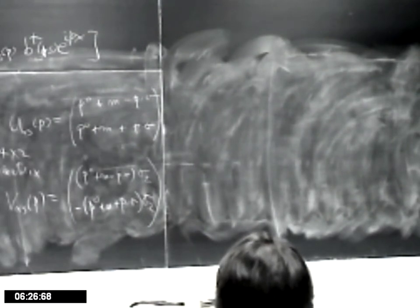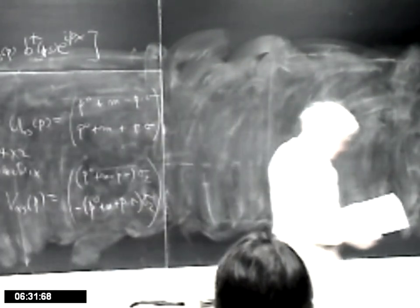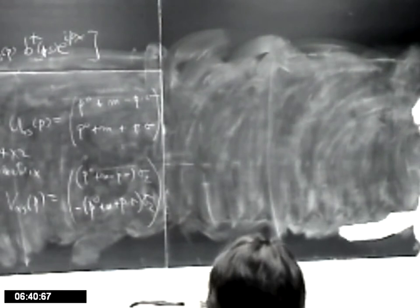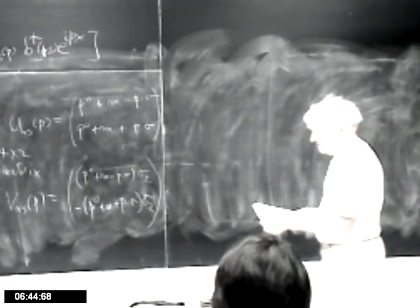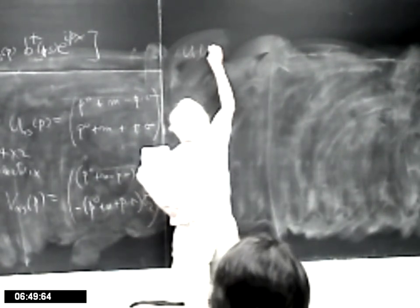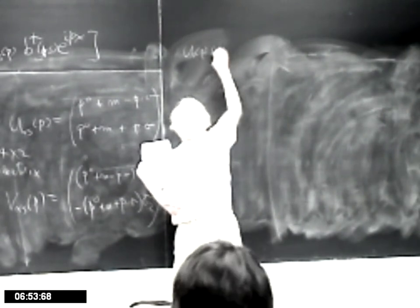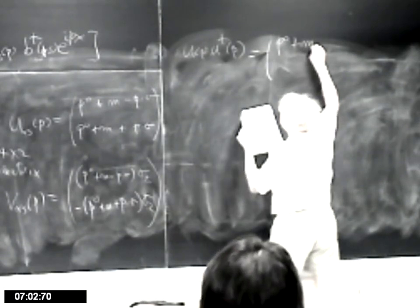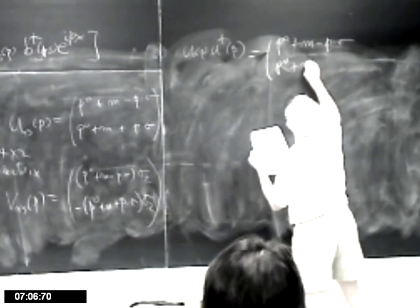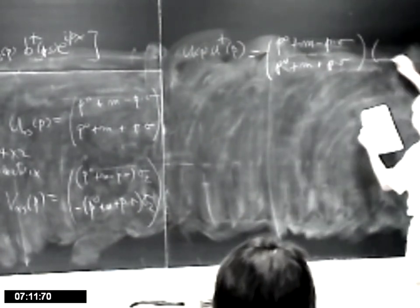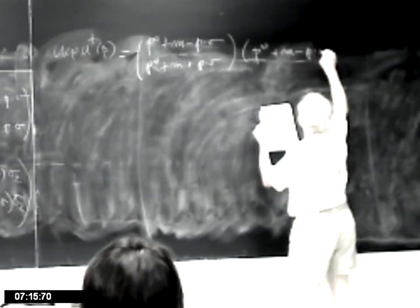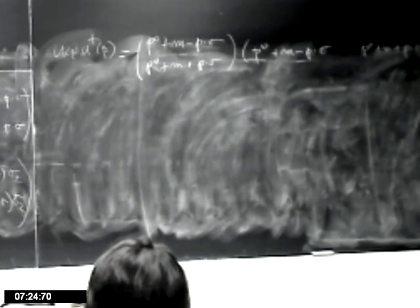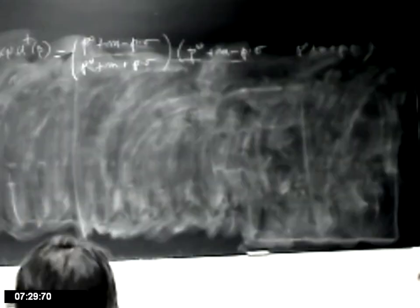Those are the two 4×2 matrices. We're going to need them when we compute the fermion propagator and later when we compute cross-sections. So let me compute U(p)·U†(p). That is this matrix times its adjoint: (P₀+M − P·σ; P₀+M + P·σ) times its transpose conjugate, which is a 4×2 times a 2×4, and you wind up with a 4×4 matrix.